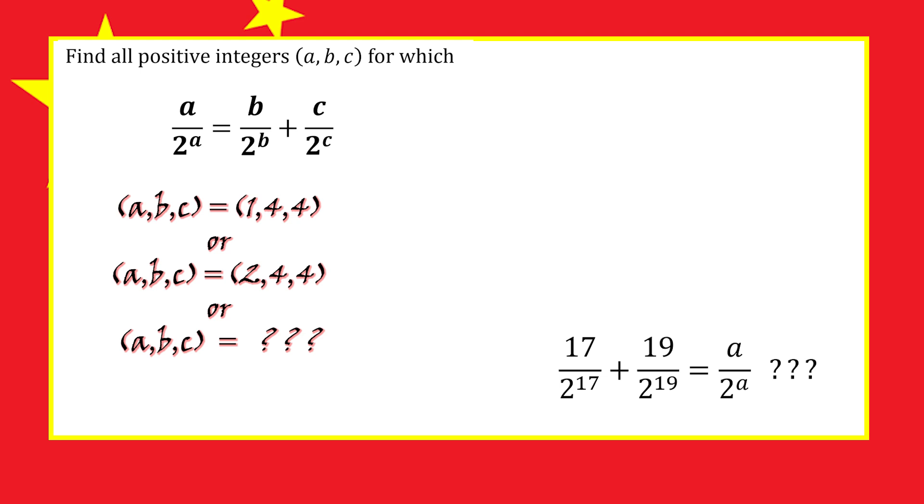Well, 2 to the 19 is a very large number, which makes 1 over 2 to the 19 a very small number. And 19 over 2 to the 19 is still very small, even when compared to 17 over 2 to the 17 or 18 over 2 to the 18.